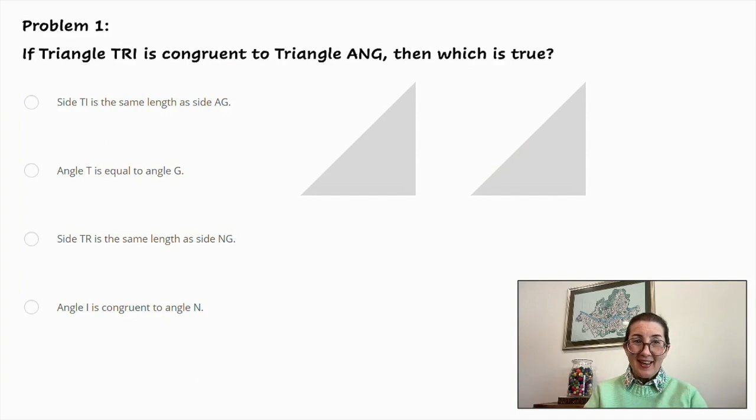Problem number one. If triangle TRI is congruent to triangle ANG, then which is true? Side TI is the same length as side AG. Angle T is equal to angle G. Side TR is the same length as side NG. Angle I is congruent to angle N.